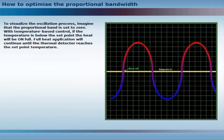To visualize the oscillation process, imagine that the proportional band is set to zero. With temperature-based control, if the temperature is below the set point, the heat will be on full. Full heat application will continue until the thermal detector reaches the set point temperature.